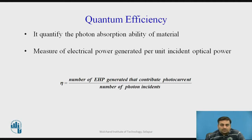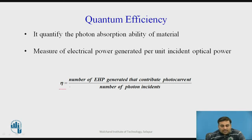Quantum efficiency is the first parameter. It is one of the most important parameters used to evaluate the quality of the photodetecting materials. Quantum efficiency quantifies the photon absorption ability of the photodetecting material, and is a measure of electrical power generated per unit incident optical power. It is denoted by eta and defined as the ratio of number of electron-hole pairs generated that contribute to photocurrent to the number of incident photons.